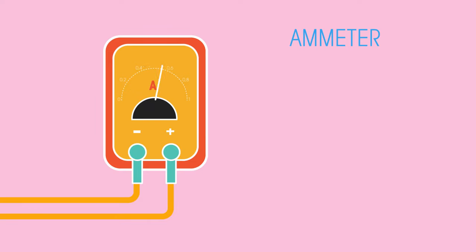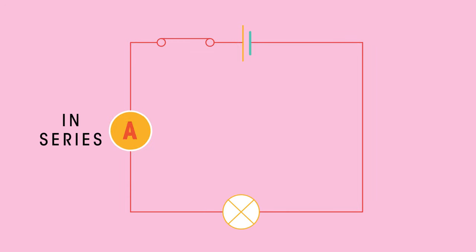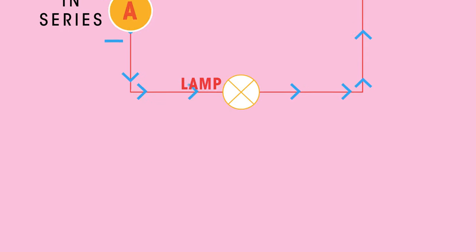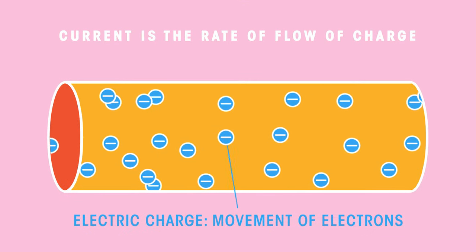To measure current we use an ammeter, and the unit of current is amperes or amps (A). Ammeters must be connected in series in a circuit. The current should flow into the positive terminal of an ammeter and leave through the negative terminal.